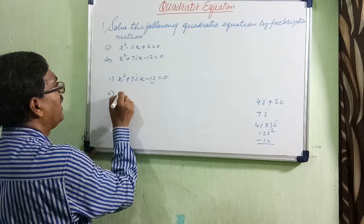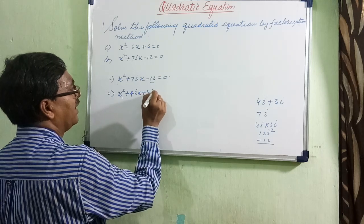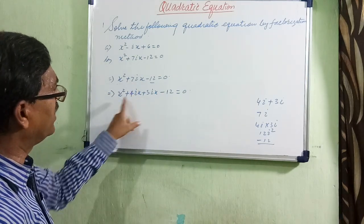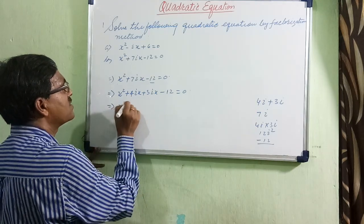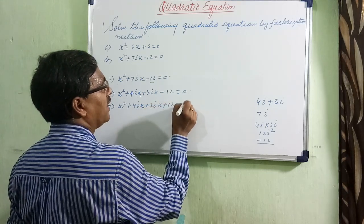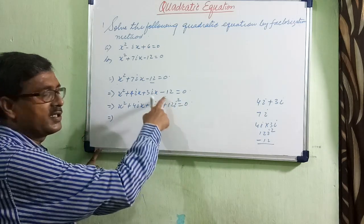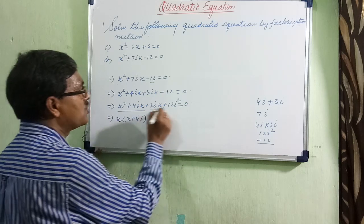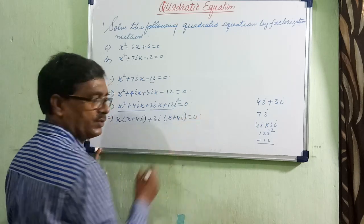So minus 12 and x squared come together. Therefore, it will be x squared plus 4ix plus 3ix minus 12 equals 0. When you add the middle terms you get 7ix, and when you multiply you get the product of first and last. We can also write this as x squared plus 4ix plus 3ix plus 12i squared equals 0, because i squared equals minus 1. Then take x common to get x times x plus 4i.